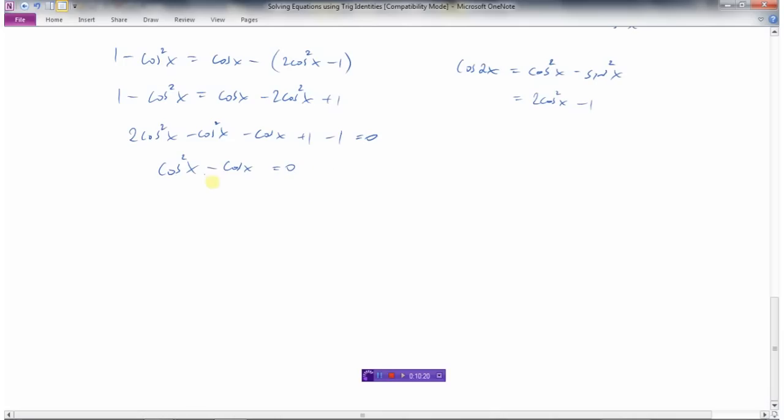This is actually not so bad now, because there's a common factor here of cos x. And so we get cos x(cos x - 1) = 0, which means cos x = 0 and cos x = 1. So I ended up with cos x = 0 and cos x = 1.